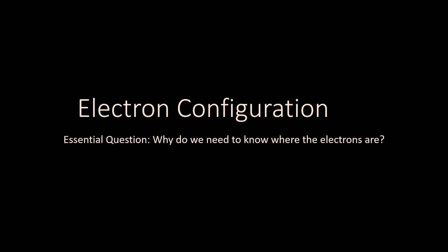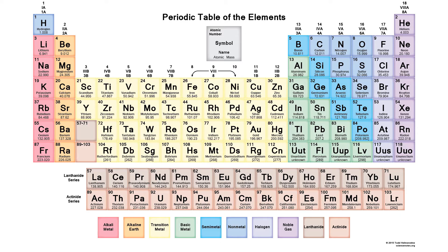Electron configuration. Whether you realize it or not, there is a lot we can tell about where an element lands on the periodic table as far as how it's going to react or how it's going to behave. First, we know that the periods tell us how many shells it has, how many energy levels there are.